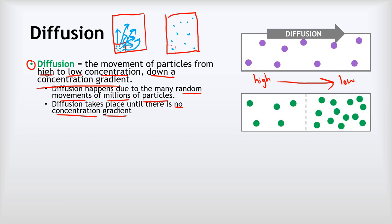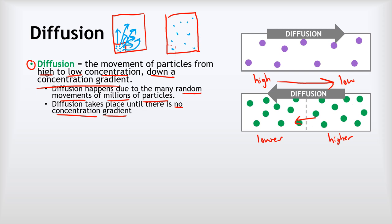In a second example, we've got a higher concentration on the right and a lower concentration on the left. So we'd expect diffusion to take place from right to left, down the concentration gradient. It will continue until the concentration of particles on the left and the right is equal. At that point, there's no overall movement — some particles go right to left and some left to right, but the numbers cancel each other out.